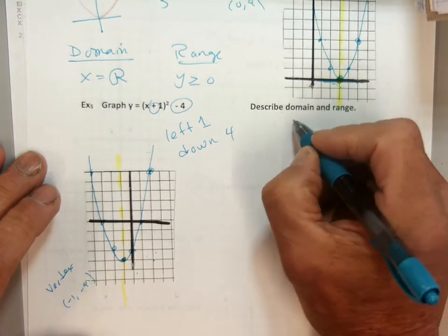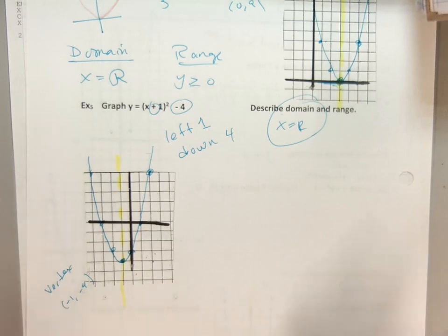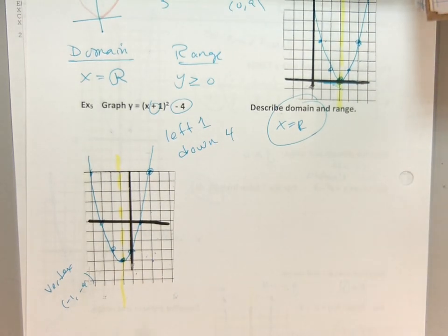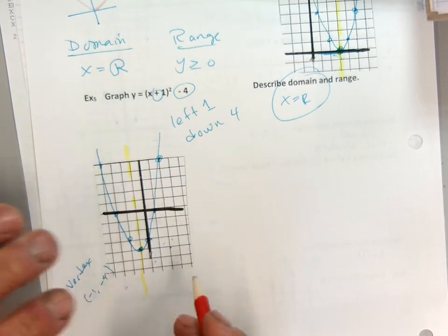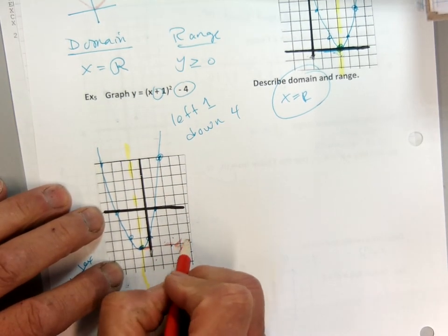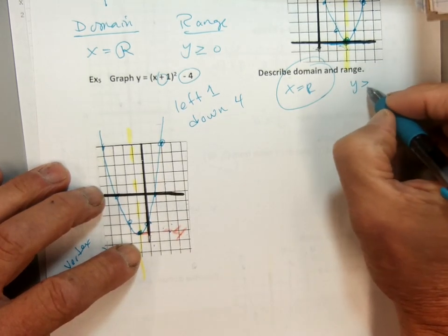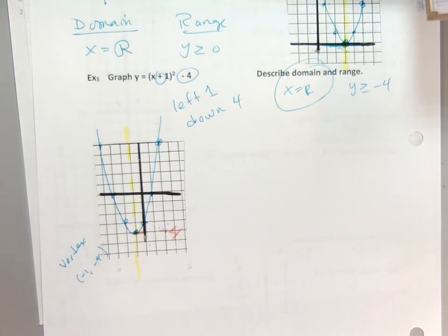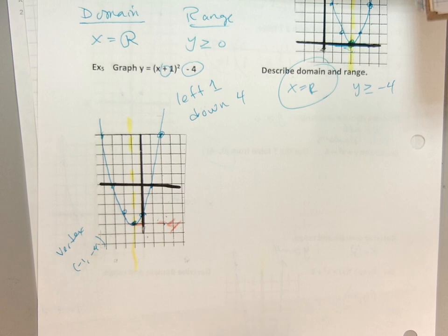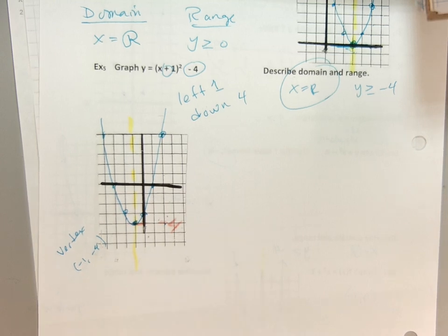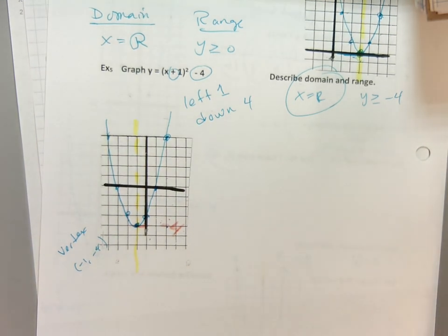Domain and range: domain is x equals all real numbers, which it always will be, because you can plug in any number for the value of x and square it. The range is different — it has a height of negative four, then goes up. So the range is y is greater than or equal to negative four. If you have any questions, I'll be here Monday. Go ahead and get the homework done, and I will see you.